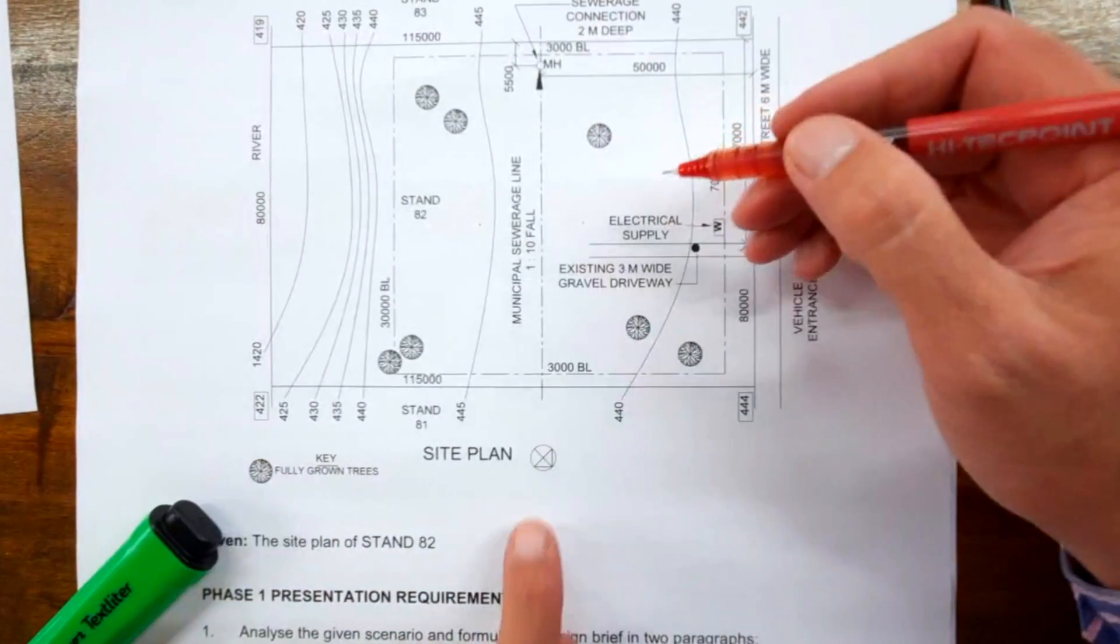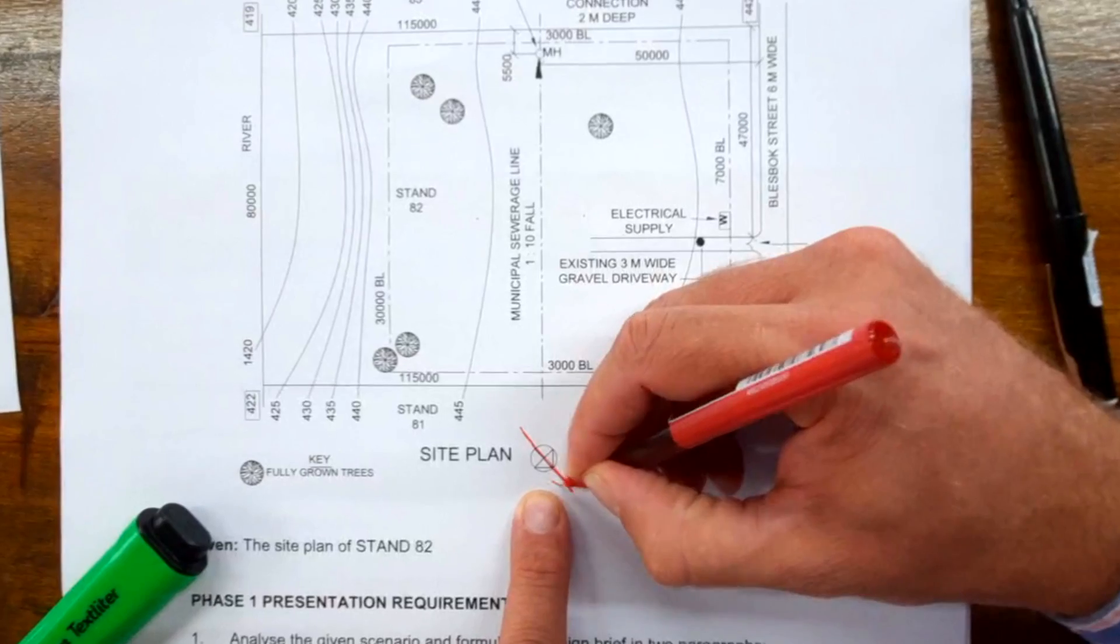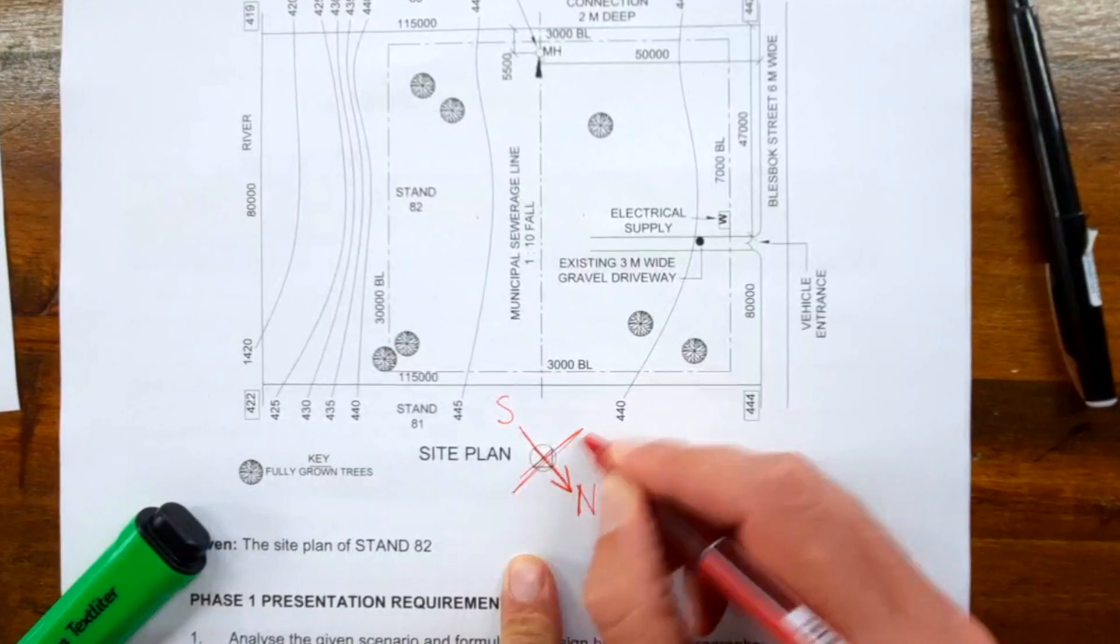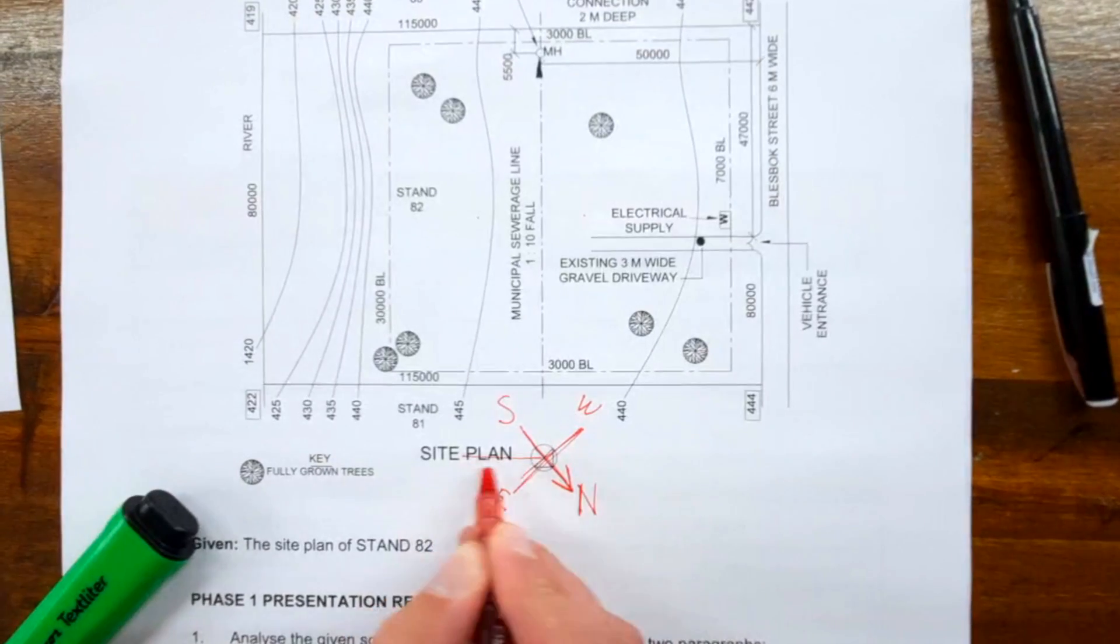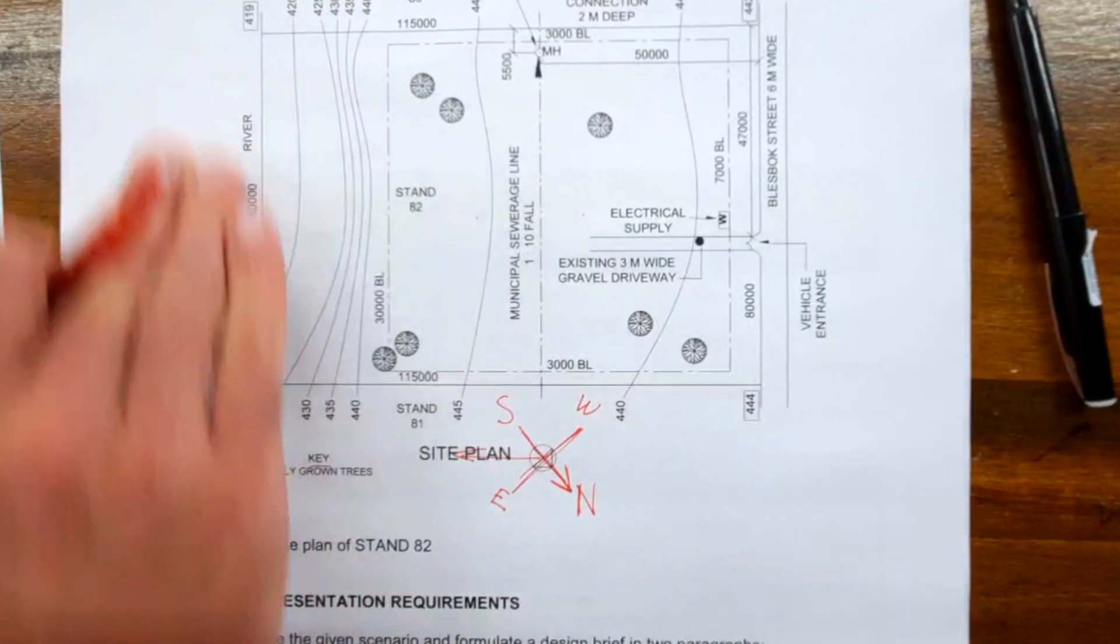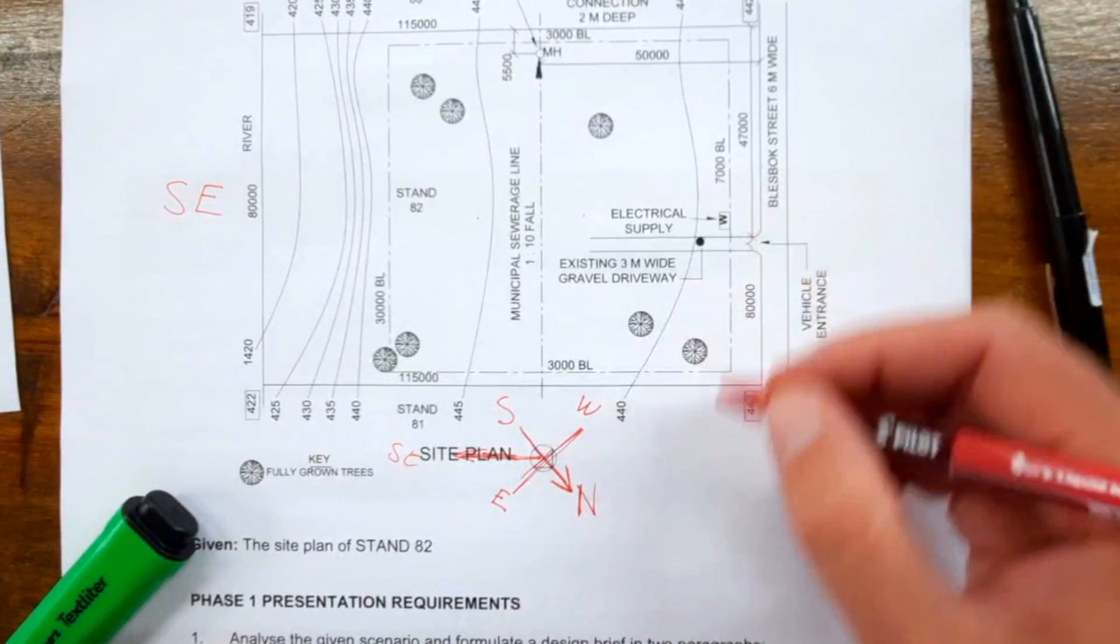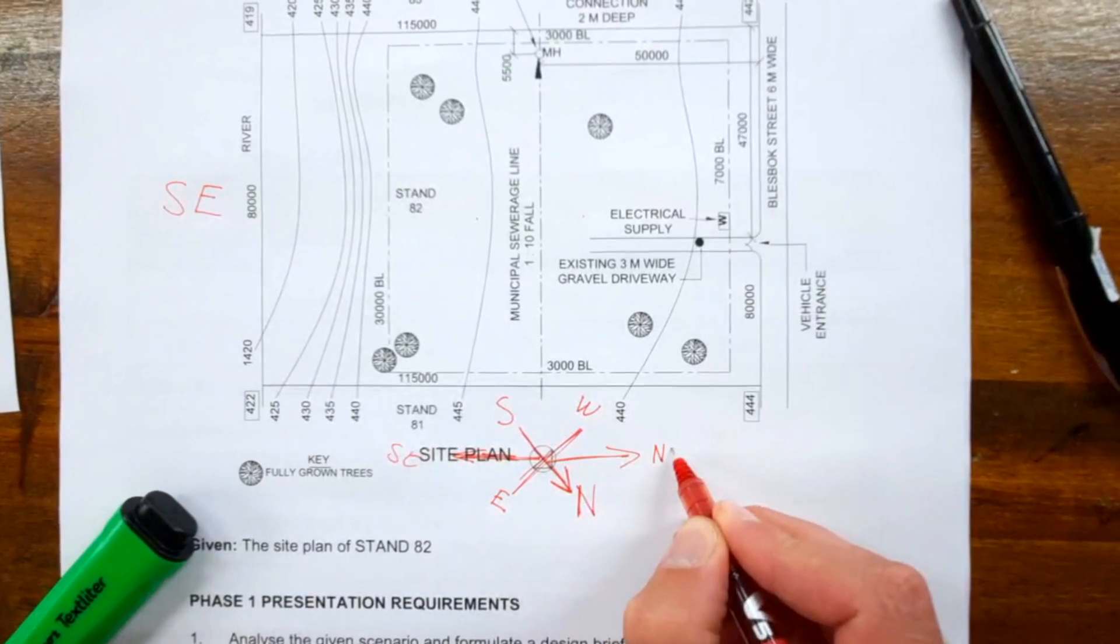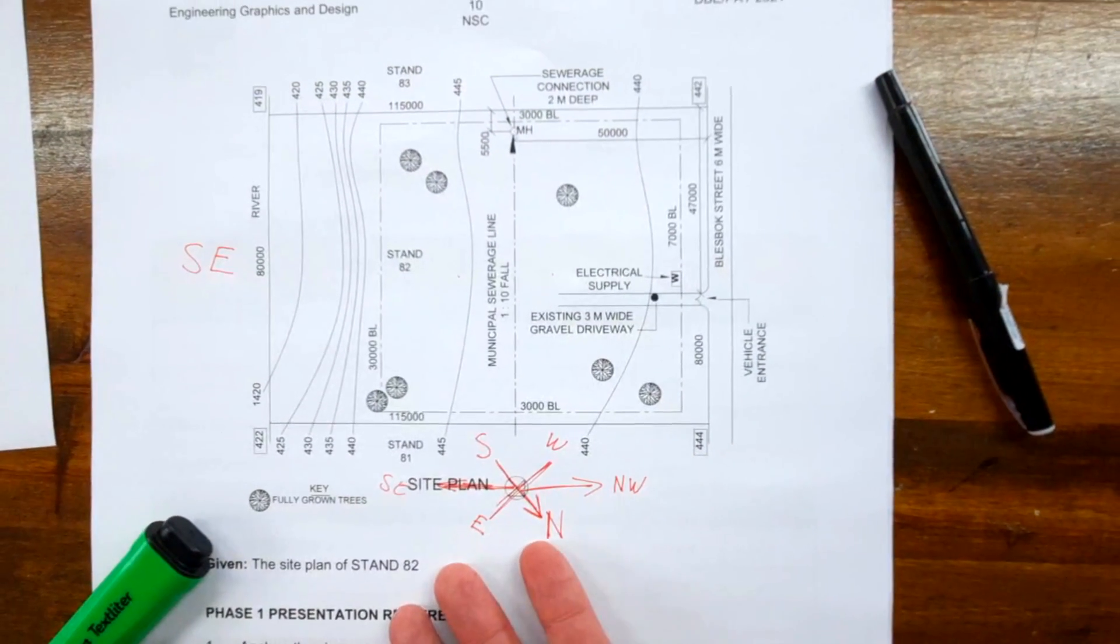I'd like to highlight the north arrow they've given you. Let's emphasize this: this is north, south, and your axis for west and east lies here. If you look in this direction, this is your southeastern border with the river. Blaze Block Street here is in the northwestern border.